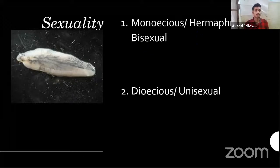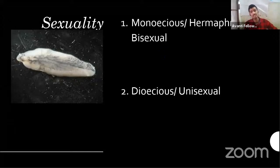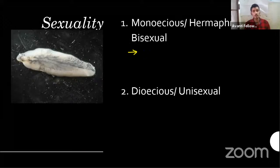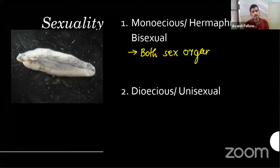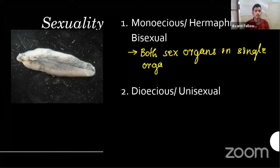In zoology, monoecious, hermaphrodite, and bisexual all mean the same thing: both sex organs within a single organism. What's the meaning of bisexual? Both sex organs in a single organism — that organism can produce both sperm and eggs.